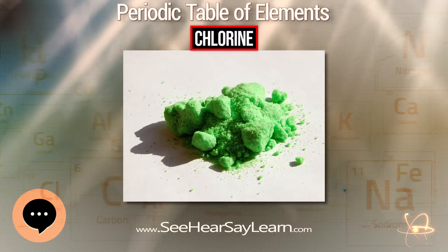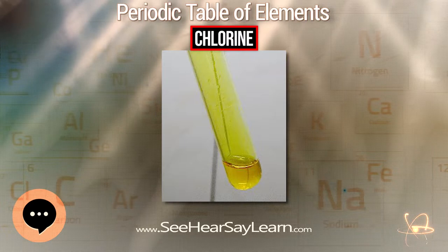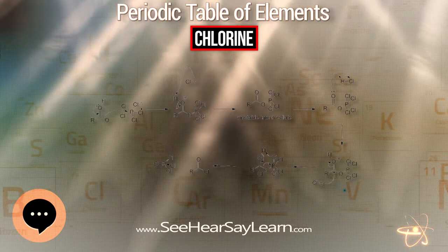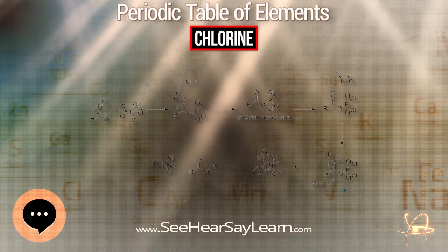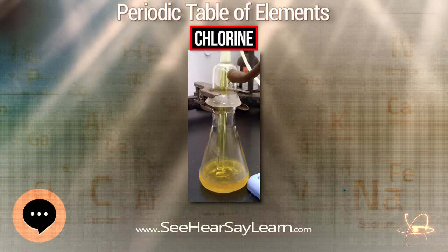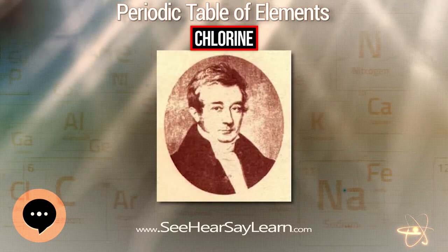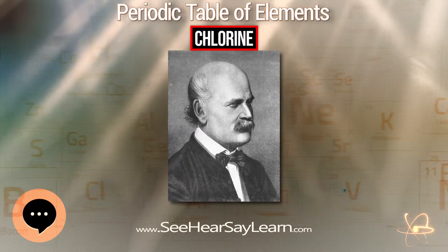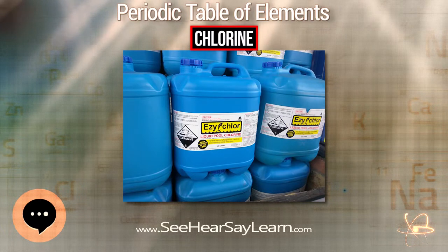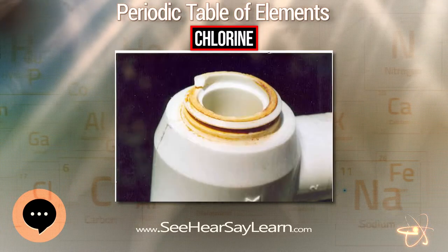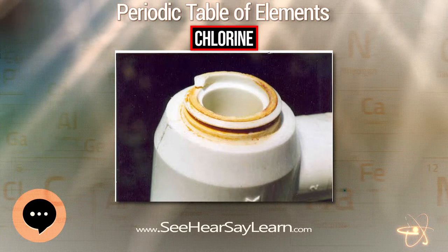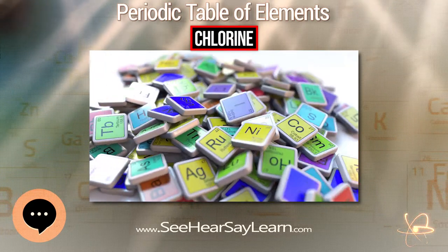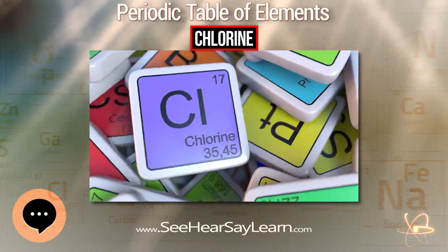Modern bleaches resulted from further work by Berthollet, who first produced sodium hypochlorite in 1789 in his laboratory in the town of Javel by passing chlorine gas through a solution of sodium carbonate. The resulting liquid, known as Eau de Javel, was a weak solution of sodium hypochlorite. This process was not very efficient and alternative production methods were sought. Scottish chemist and industrialist Charles Tennant first produced a solution of calcium hypochlorite, then solid calcium hypochlorite.